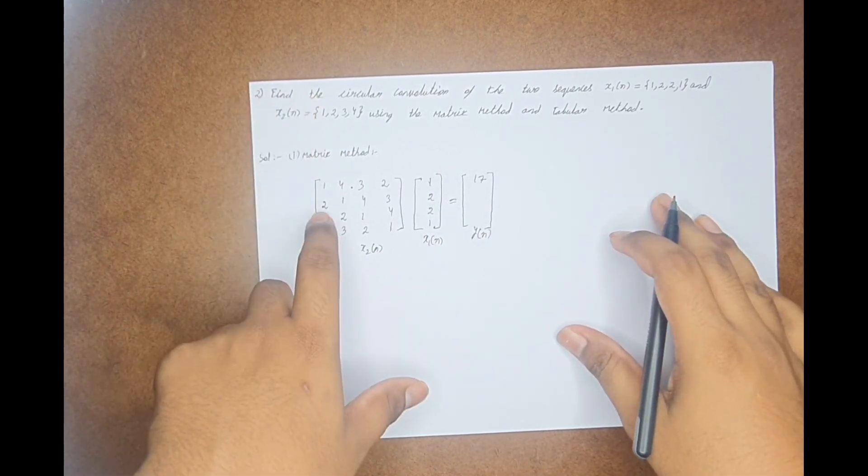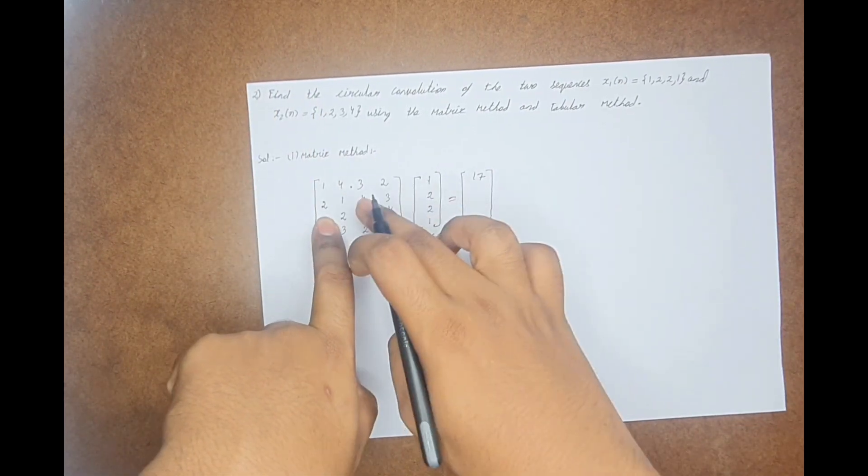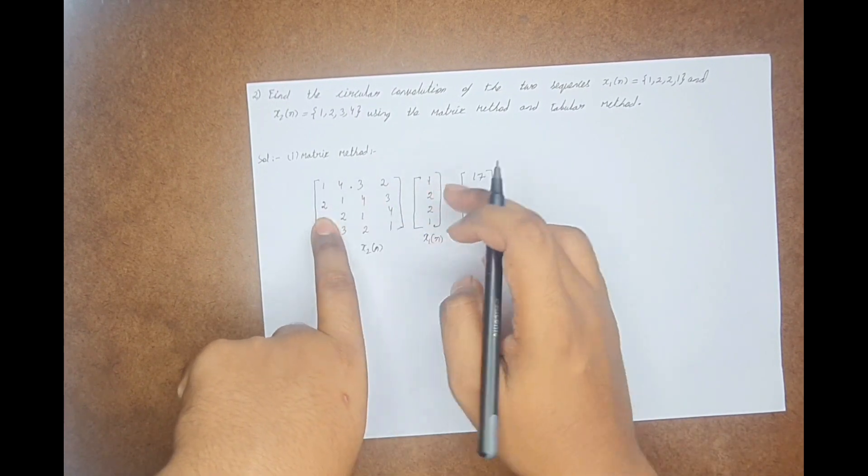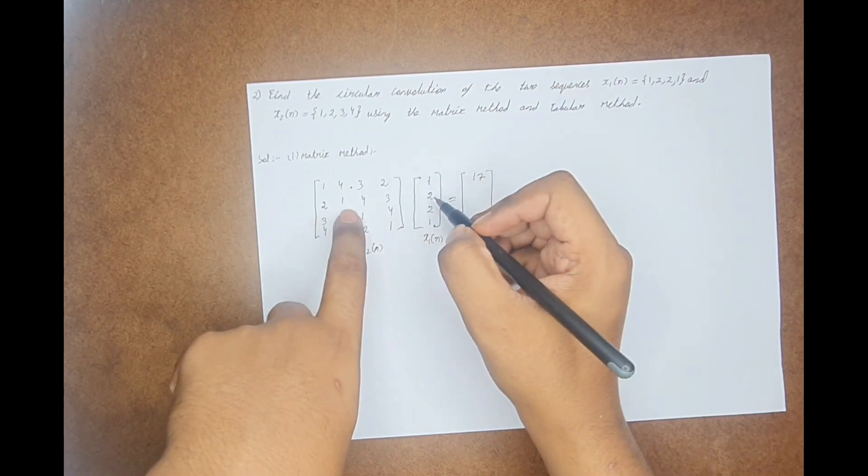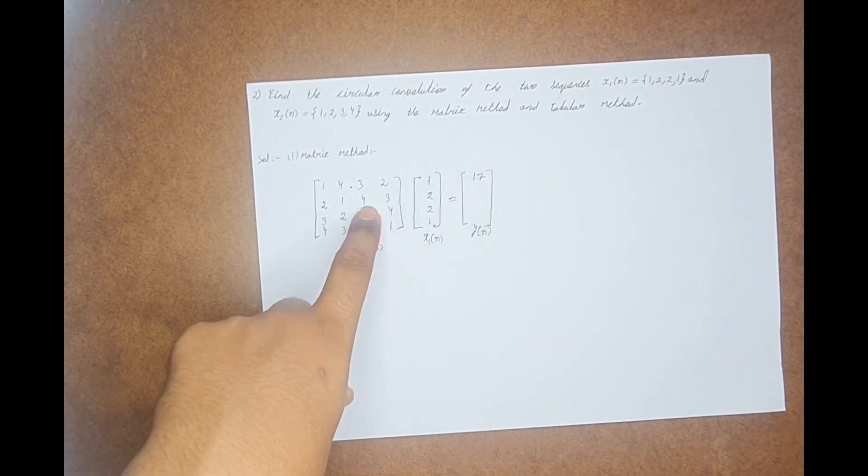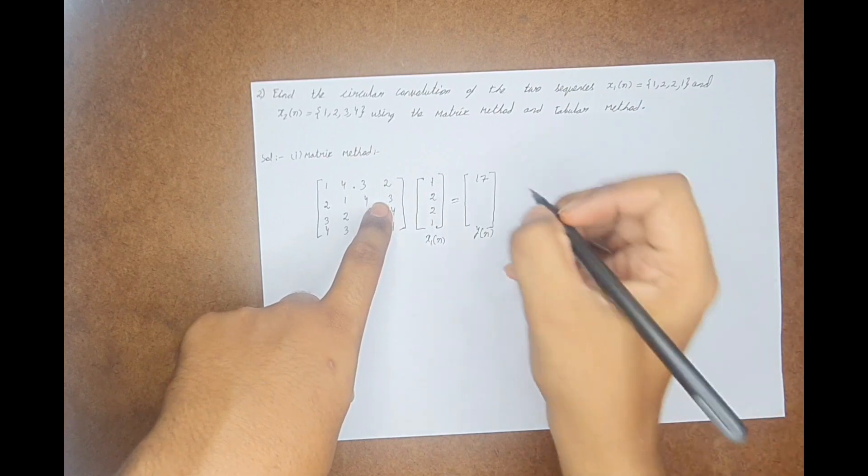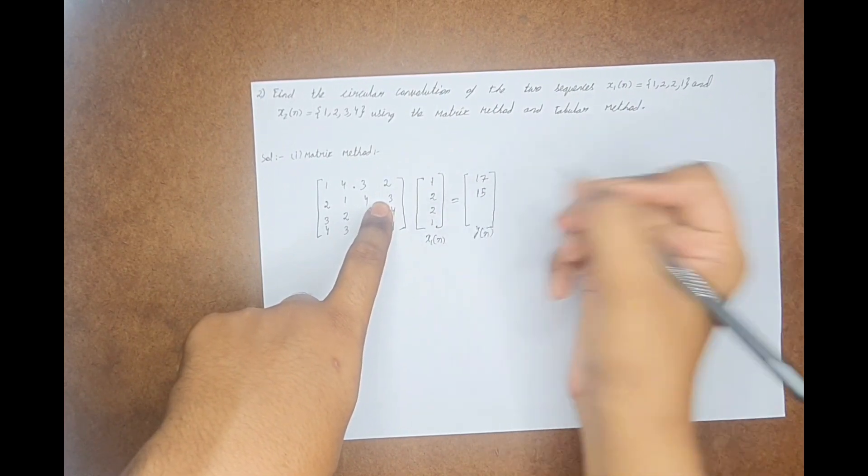Similarly, for y(1), just multiply the second row with this, which is 2 plus 2 is 4, 4 plus 8 is 12, 12 plus 3 is 15. So you have the 15 value.